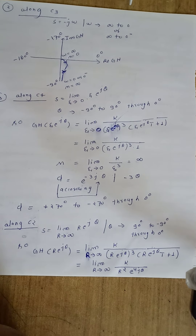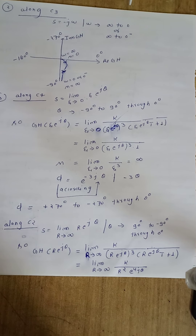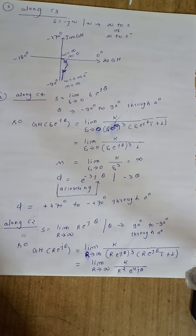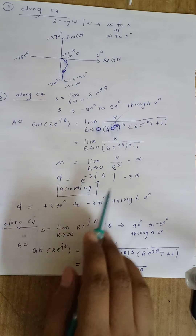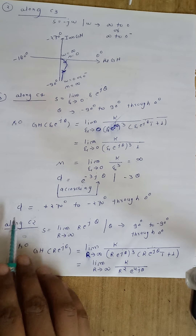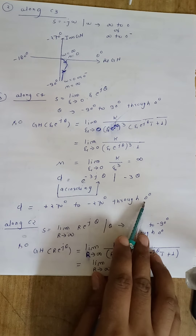So we can map section C4 from the s-plane to the GH-plane according to a semicircle of infinite radius with angle varying from plus 270 to minus 270 through zero degrees.